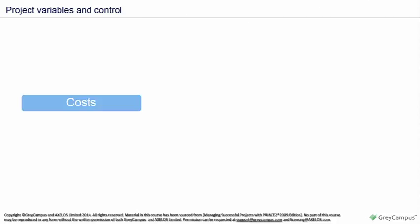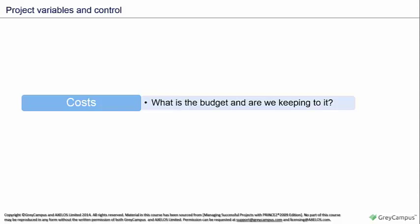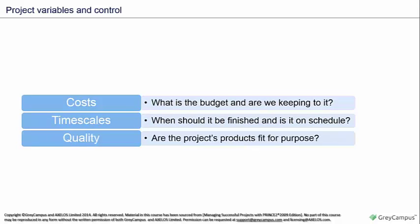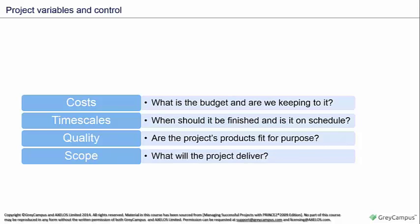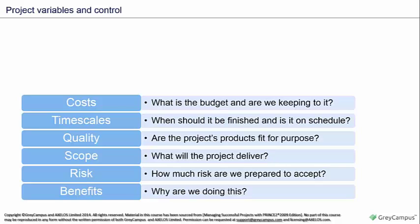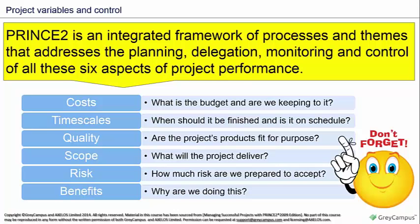What will the project manager be controlling? They'll be controlling what we call the project variables: Costs - what is the budget for this project and are we keeping to it? Timescales - when should it be finished and is it on schedule? Quality - are the project's products fit for purpose? Scope - what will the project deliver, and are we making all the things we're supposed to be making? Risk - how much risk are we prepared to accept in the project? And Benefits - why are we doing this, why is this project taking place? This list of six items is one you need to remember, as these are the main project variables that we need to control.